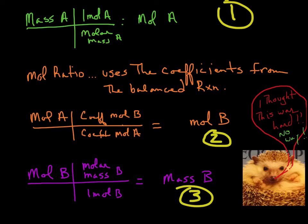And then finally, I'm going to go from moles of B and I'm going to multiply by the molar mass of B over one mole of B. And that's going to give me my final answer - the grams of B, or the grams of the unknown substance. That's not that hard, is it? No, it's not.